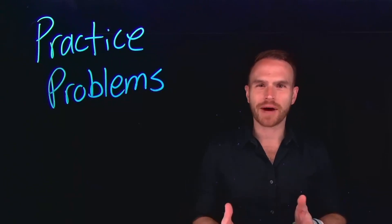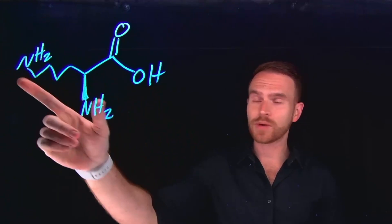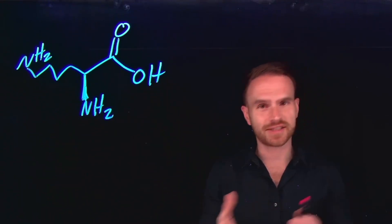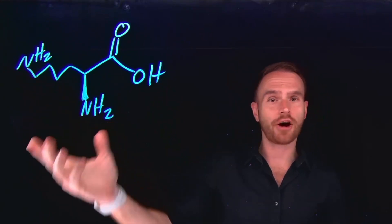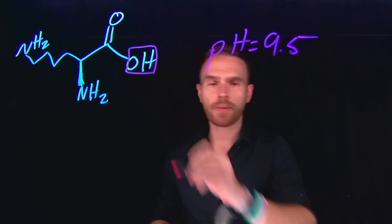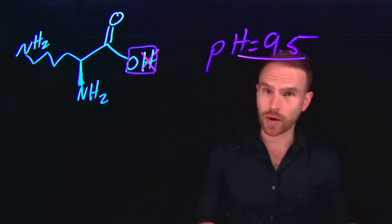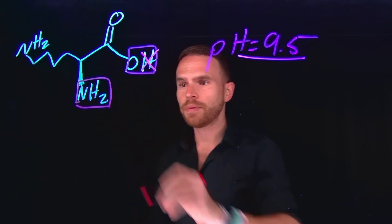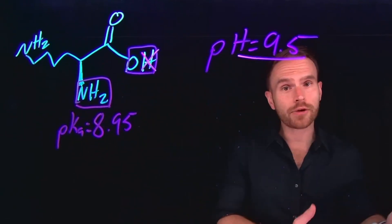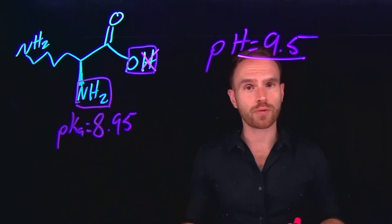Now let's try some practice problems. Pause the video, try these problems independently, and then resume to check my solutions. For lysine, we have three functional groups to consider regarding their protonation state at a given pH. All amino acids have an amine functional group and a carboxylic acid, but lysine also has a basic side chain — another amine group. In this question, the pH is about 9.5. The pKa of carboxylic acids tends to be around 2 to 3, so we would expect the carboxylic group to be deprotonated since the pH is greater than the pKa. The pKa2 of the alpha-amine for lysine is around 8.95. Since the pH is greater than that, we would not expect this amine to be protonated — it will exist in its basic form.